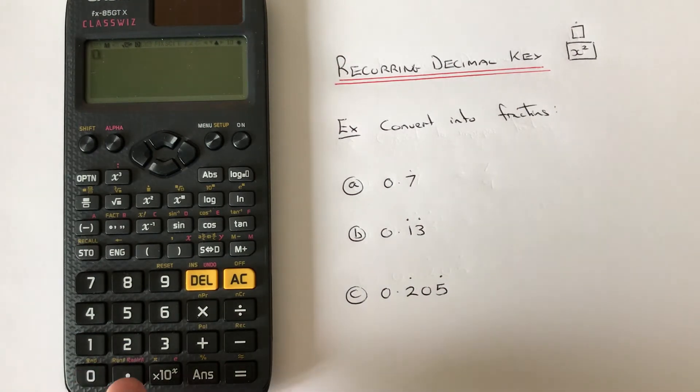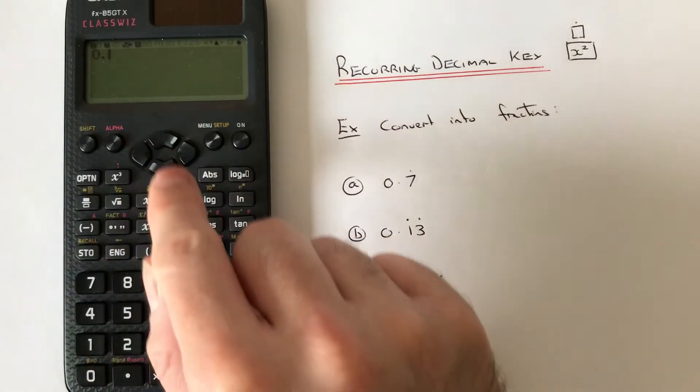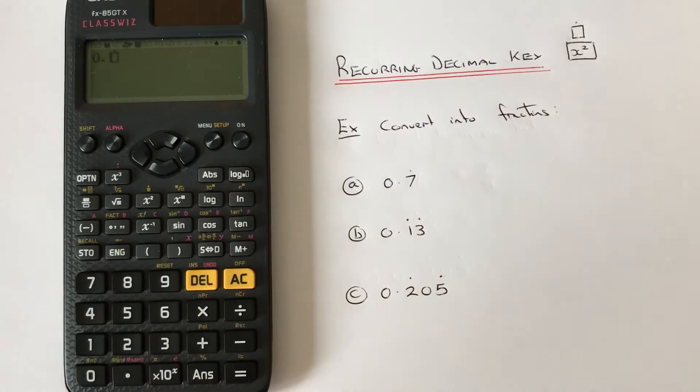Type 7 into the box, press equals, and that will convert it into a fraction.